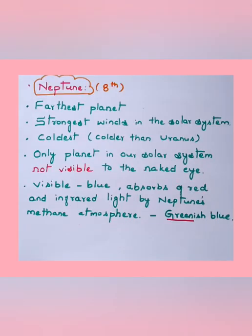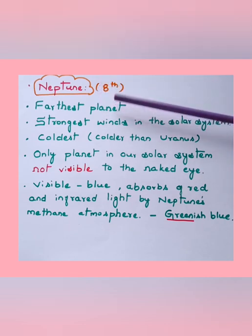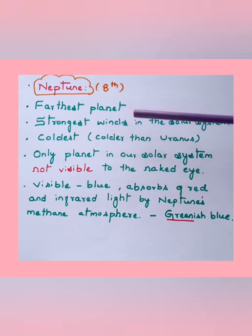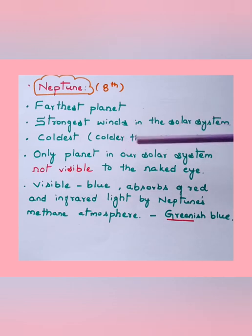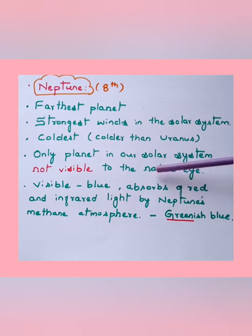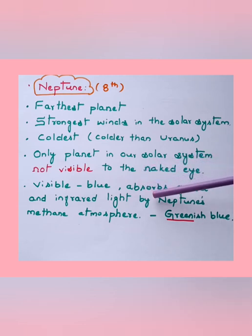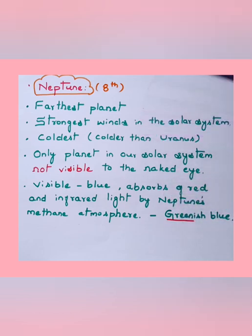Neptune is the eighth planet and the farthest planet from the sun in the solar system. It possesses the strongest winds in the solar system and has a colder atmosphere than Uranus. Neptune is the only planet in the solar system not visible to the naked eye — it is visible only through a telescope. It appears slightly blue or greenish blue because its methane atmosphere absorbs red and infrared light. It is called the green planet.